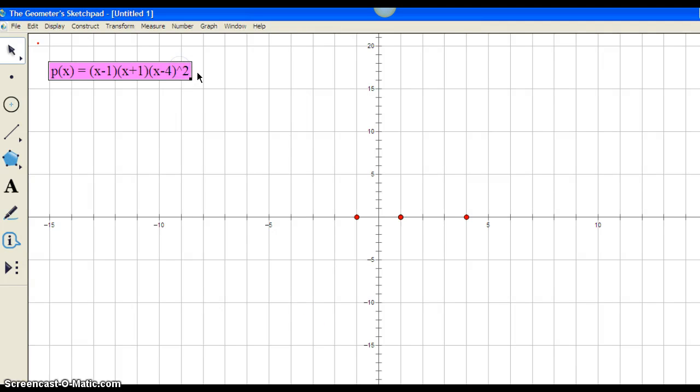I'm in Geometry Sketchpad, and you can see I've got the function p of x written up here, and I have our zeros labeled at negative 1, positive 1, and 4.